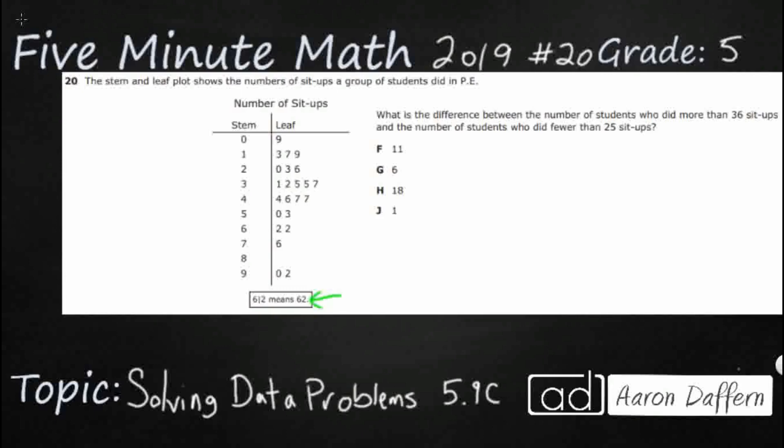Always down here, it's going to give you the key, and 6 and then that line and that 2 means 62, which means our 6 is going to act as our 10s place, and our 2 is going to act as our 1s place.